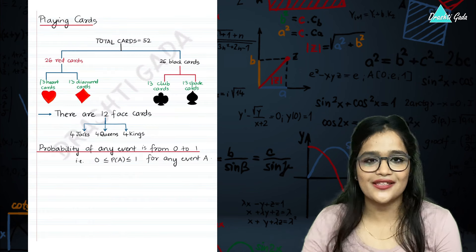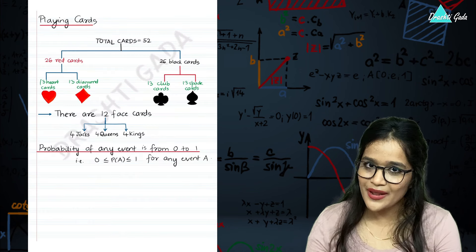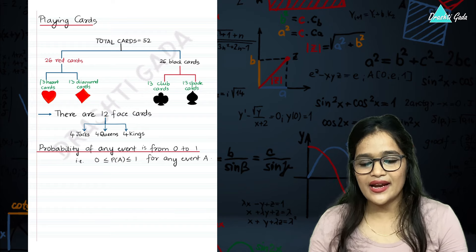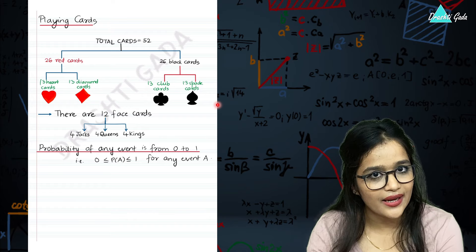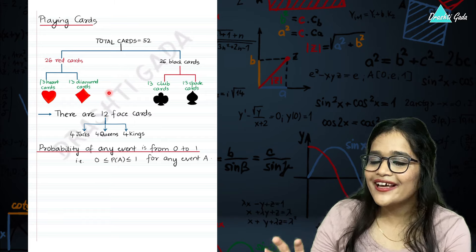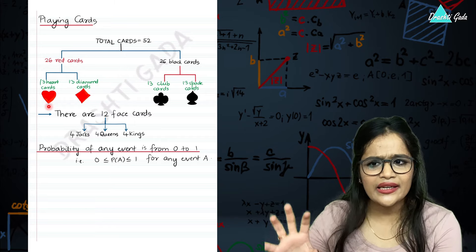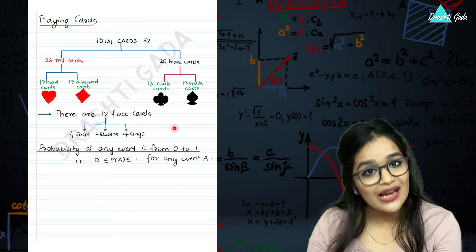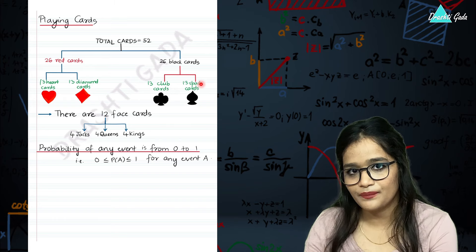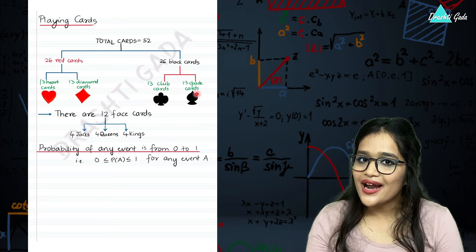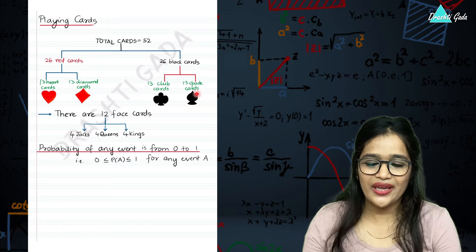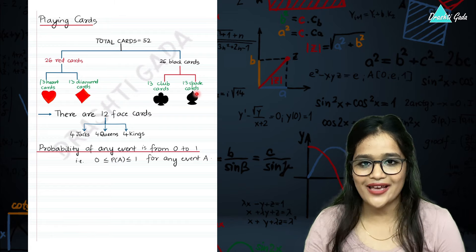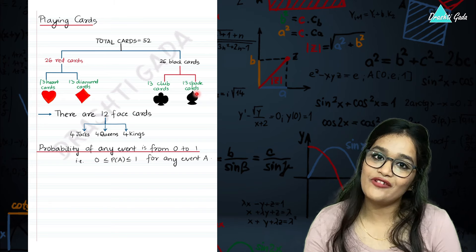There are many questions on cards. You should know there are 52 cards total: 26 red and 26 black. Of the 26 red cards, 13 are heart cards and 13 are diamond cards. Of the 26 black cards, 13 are club cards and 13 are spade cards. In total, 12 are face cards — 4 Kings, 4 Queens, and 4 Jacks.